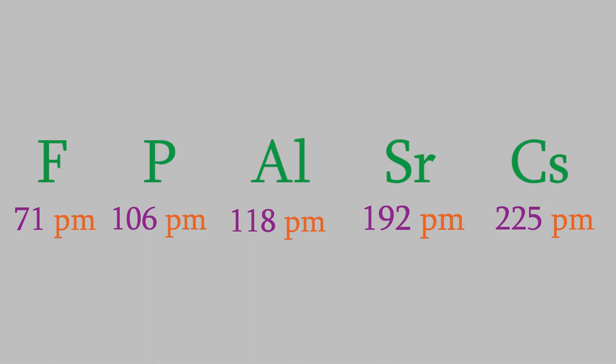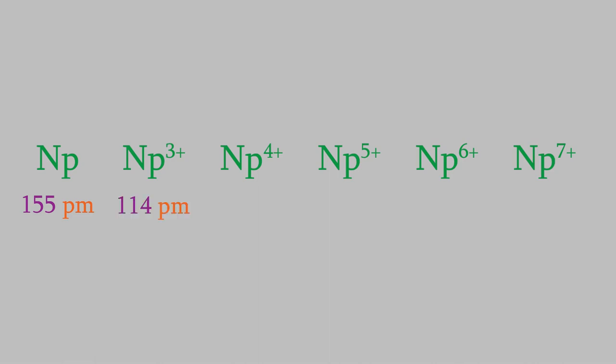Now, what happens when we create ions instead of neutral atoms? For example, suppose we have a neptunium atom, which has a radius of 155 picometers. In order to create a cation, we have to remove electrons. As you might expect, when we remove electrons, the radius of the ion decreases. So in this series of neptunium ions, the radius decreases until it reaches 85 picometers for the neptunium plus 7 ion.